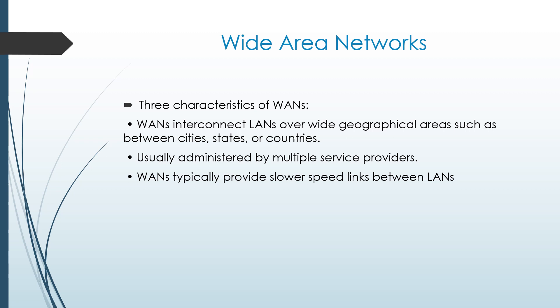A Wide Area Network (WAN) spans large geographical areas such as between cities, states, or countries. WANs are typically governed by multiple service providers and generally provide slower speed links between locations.